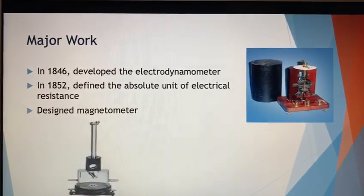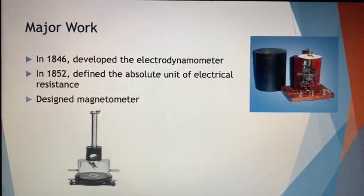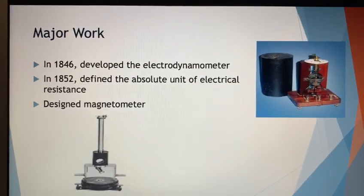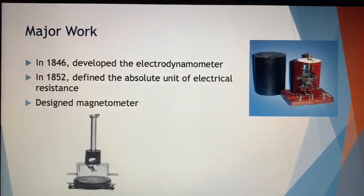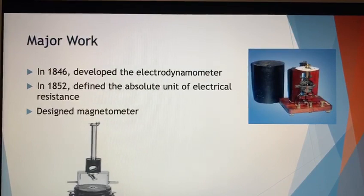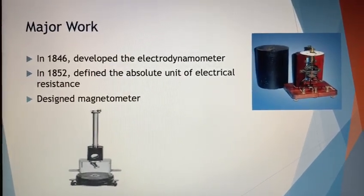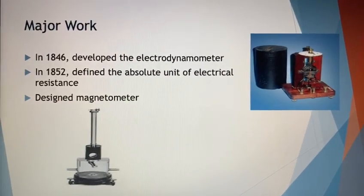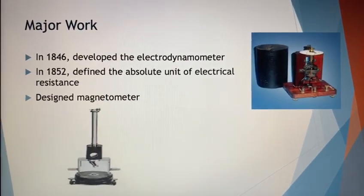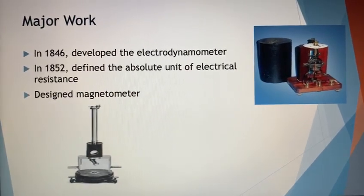The other major work of William Weber was that in 1846, he developed an electrodynamometer, in which a current causes a coil suspended within another coil to turn when a current is passed through both of these coils. The right corner shows a picture of the electrodynamometer. Followed by this work, in 1852, he defined the absolute unit of electrical resistance. Later, he designed the magnetometer along with Professor Gauss. This magnetometer was able to measure the magnetic strength, and it was notable for being portable and very sensitive in measuring the magnetic field.